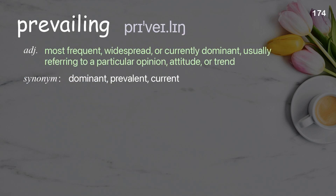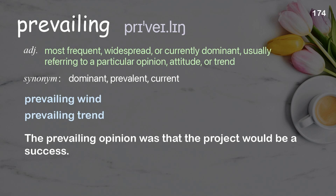Prevailing: most frequent, widespread, or currently dominant; usually referring to a particular opinion, attitude, or trend. Examples: prevailing wind; prevailing trend. The prevailing opinion was that the project would be a success.